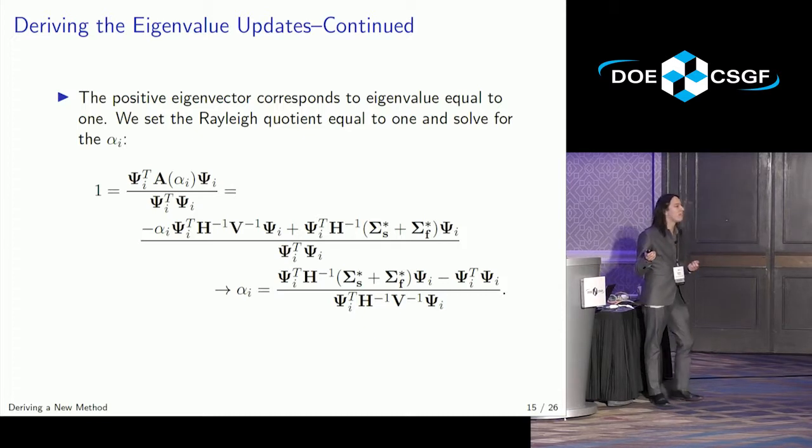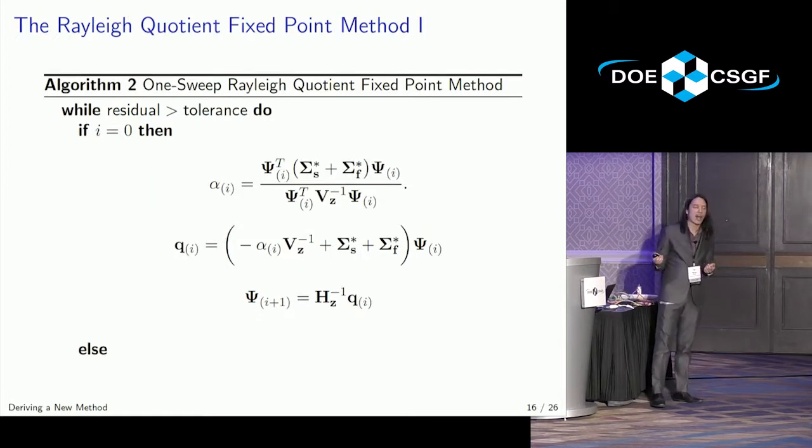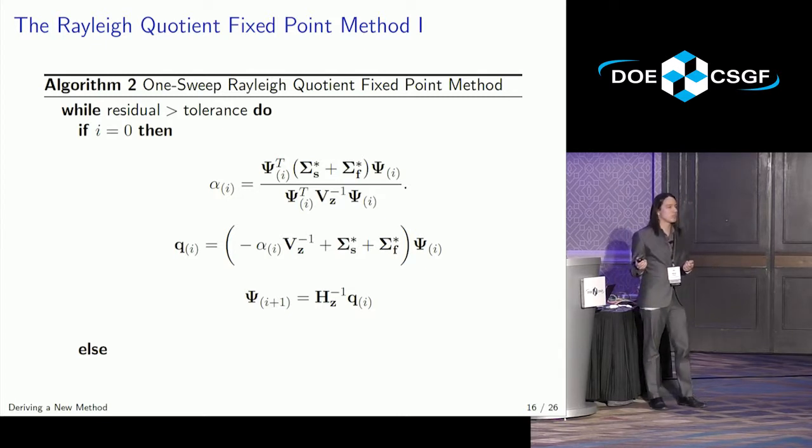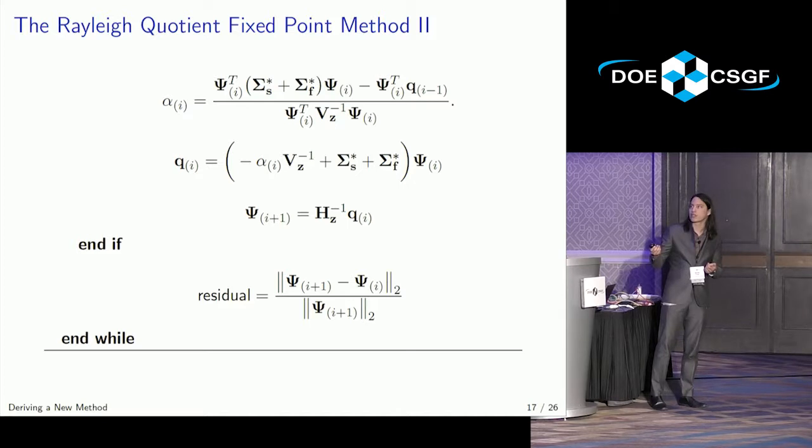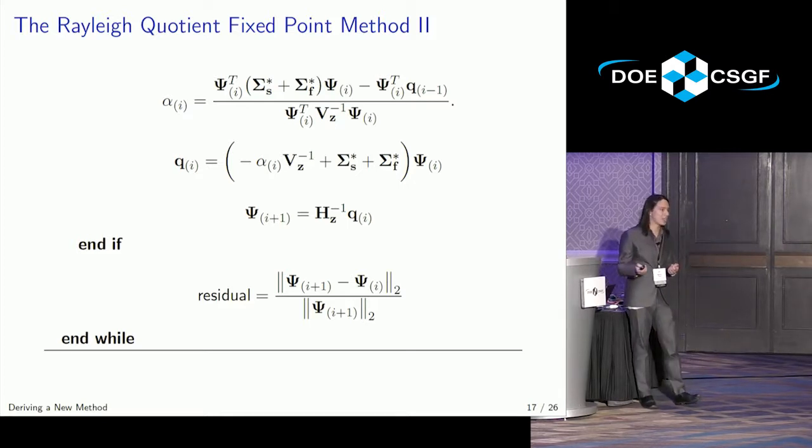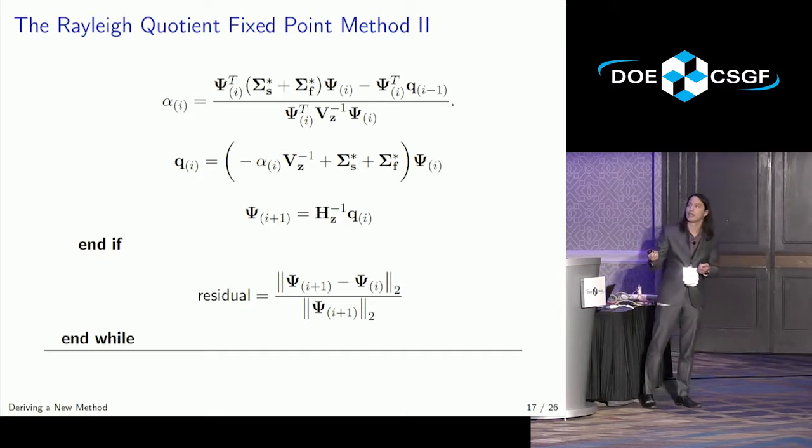And you end up with an algorithm that lets you directly calculate the alpha eigenvalue based on your current eigenvector iterate. And this is just the algorithm, and this is very easily implementable in existing transport codes, and we did this at Livermore.